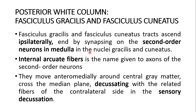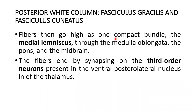Internal arcuate fibers is the name given to the axons of the second-order neurons. These fibers move around the central gray matter and cross the median plane, decussating with related fibers of the contralateral side in the great sensory decussation in the medulla. The fibers then ascend as one compact bundle — the medial lemniscus — through the medulla oblongata, pons, and midbrain, ending by synapsing on the third-order neurons present in the ventral posterolateral nucleus of the thalamus.